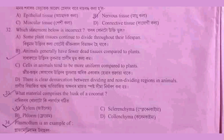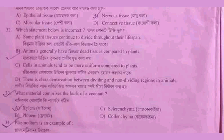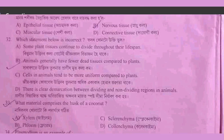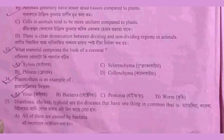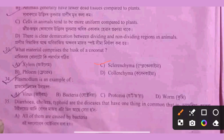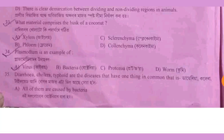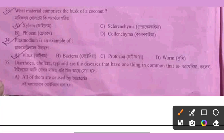Animals generally have fewer dead cells and dead tissue compared to plants throughout their lifespan. Option C. Question 34: Plasmodium is an example of protozoa.